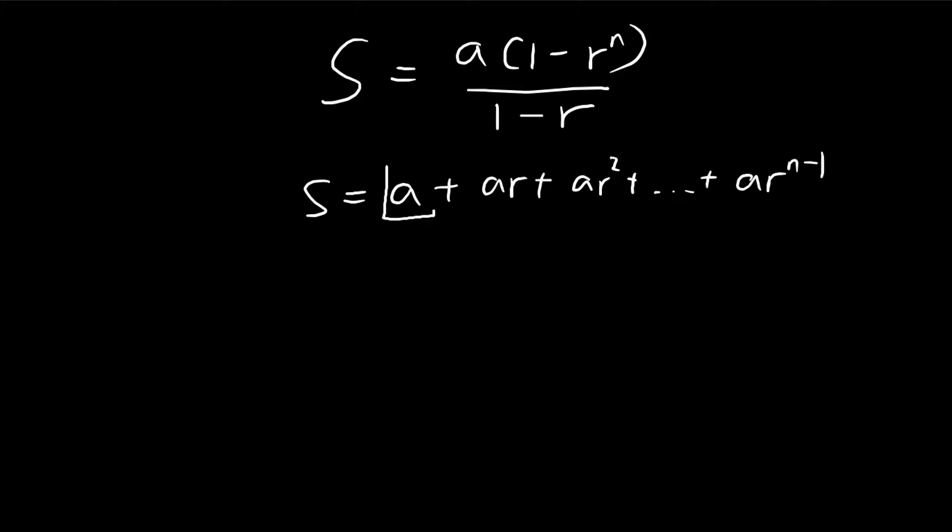A is what we call the first term. And R is what we call the common ratio. It's called the common ratio because each successive term is multiplied by R. The ratio of this term with its previous term is always R because we multiply the previous term by R to get the next one.